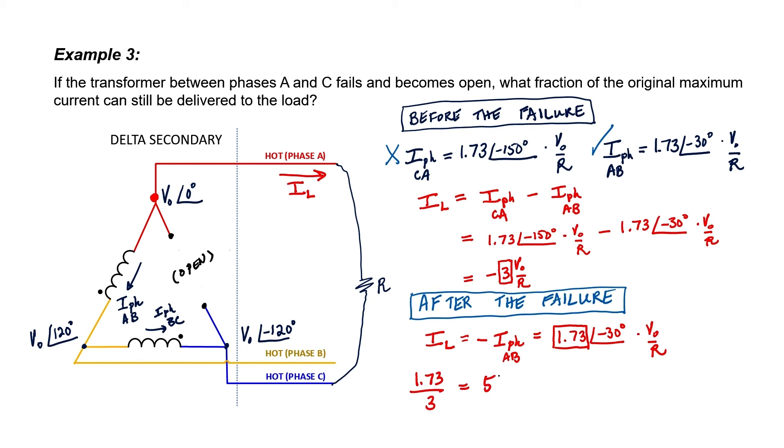This transformer can deliver 57.7 percent of the original current to the load, so we could say that the transformer is operating at 57.7 percent efficiency if one of the three transformers here in the bank were to fail.